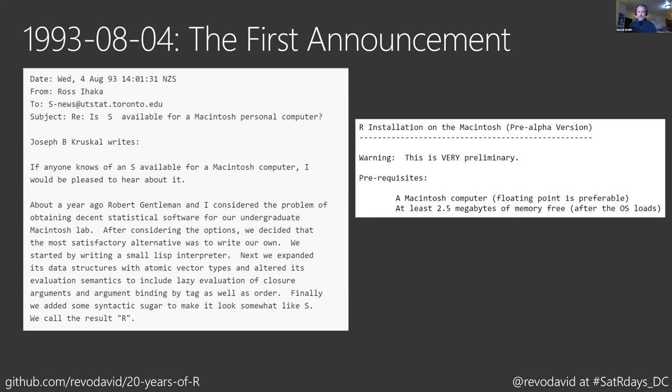If you dive into the details of that announcement, they say: 'Warning, this is very preliminary.' Prerequisites: a Macintosh computer — floating point is preferable. I didn't even know floating point was not an option back then, and how you could do statistical computing without floating point is quite beyond me. You also need at least 2.5 megs of memory, which is probably about as much as this watch on my wrist right now. Just a bit of context for back there in 1993.